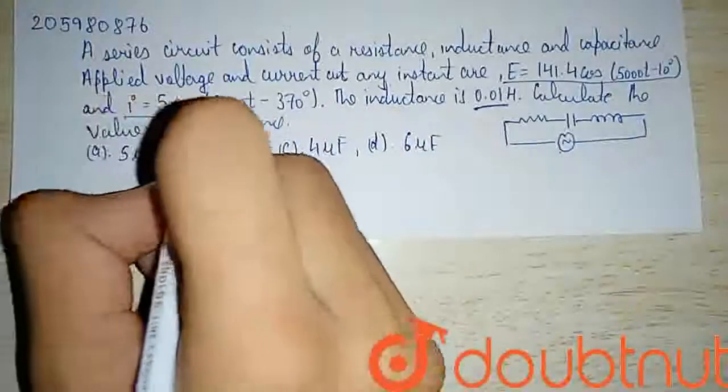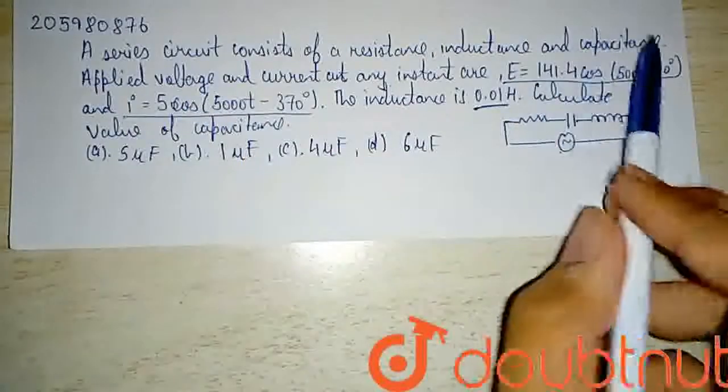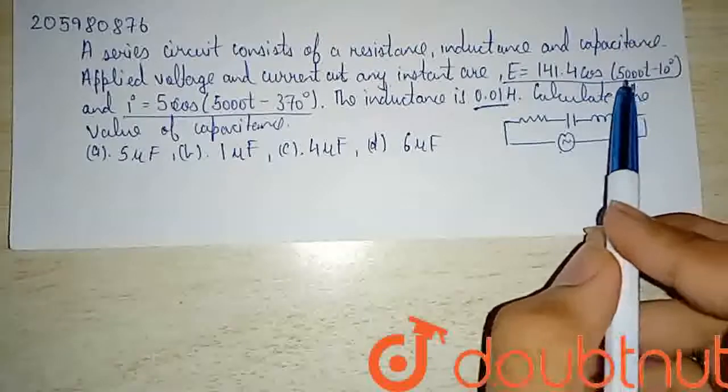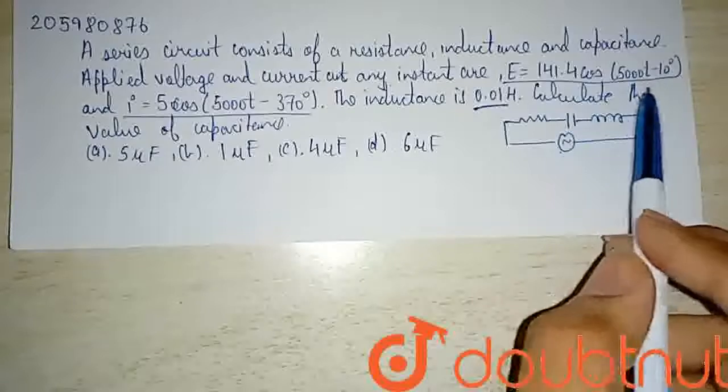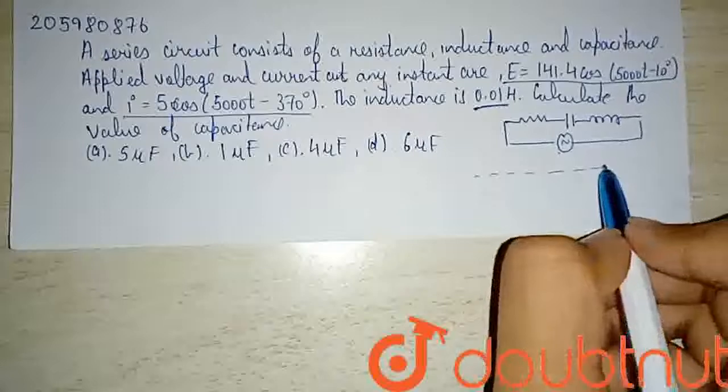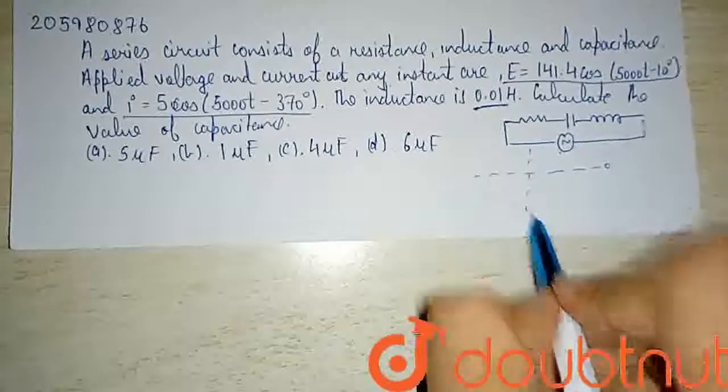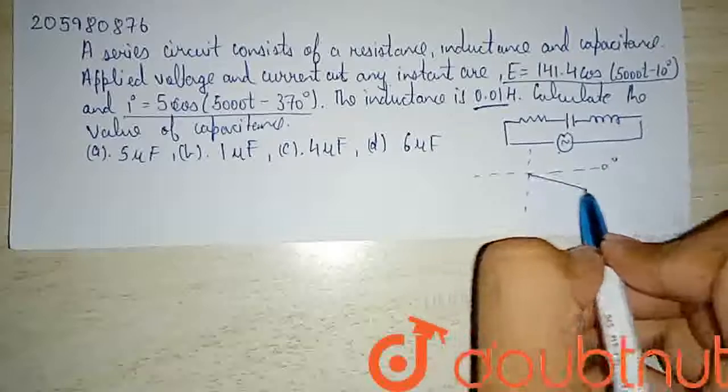If we look at the current expression, suppose this is my zero line, the zero degree line. Now minus 10 degrees means something like this.